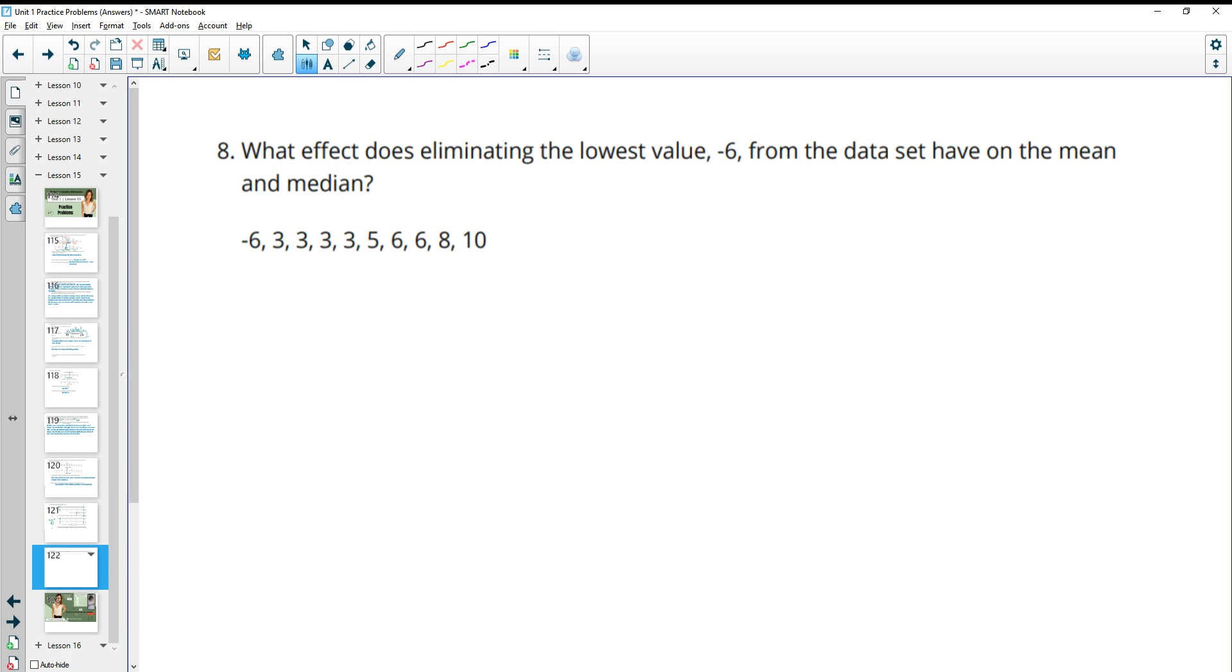Number eight, what is the effect of eliminating the lowest value negative 6 from the data set on the mean and the median? So let's look at the median first because it's quicker to calculate. We've got 10 data points. So the middle is going to be here, splitting it at 5 and 5. So our median for the original is in between these two data sets, the middle of 3 and 5, which is 4. Once we eliminate this low value, now the median moves up to this spot. So we have four numbers below it and four numbers above it. So the median is going to move from 4 to 5.